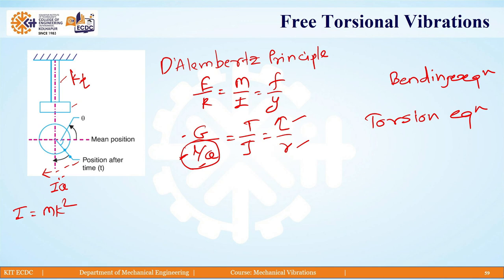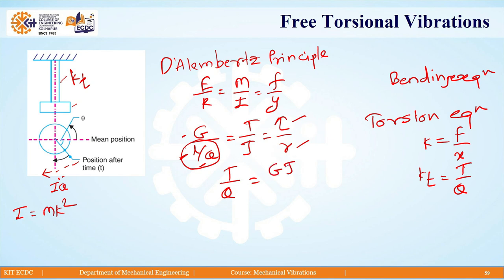Just as stiffness for longitudinal vibration is force divided by displacement, torsional stiffness kt is defined as torque divided by angular displacement. Rearranging the torsion equation by dividing T by θ, we get kt = GJ/L, where G is the modulus of rigidity (material property), J is the polar moment of inertia (geometric property), and L is the length of the shaft (geometric property).